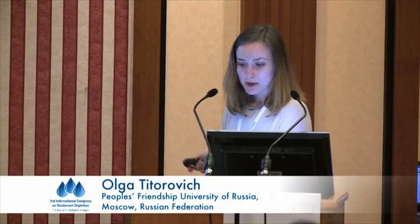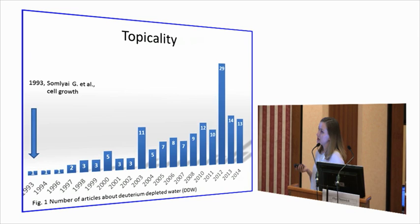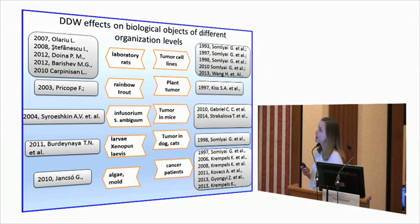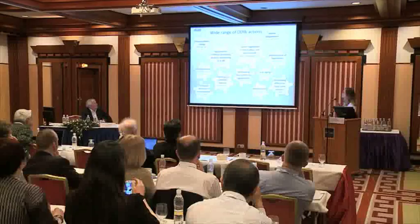The unique properties of deuterium-depleted water were discovered in 1993. Since that time, the scientific interest in them has been growing every year. Investigations show that biological objects at different organization levels are highly sensitive to the isotopic composition of water. Moreover, it is proven that deuterium-depleted water is involved in a large number of regulatory processes. With such a wide range of action, there must be a universal mechanism of its work.